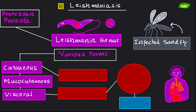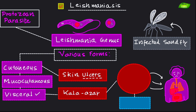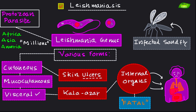There are three forms categorized based on symptoms. Cutaneous leishmaniasis presents as skin ulcers. Visceral leishmaniasis is also known as kala-azar — this name is always associated with leishmaniasis and involves damage to internal organs, which can also be fatal if untreated, similar to trypanosomiasis. Leishmaniasis is endemic in parts of Africa, Asia, and America, affecting millions of people annually.